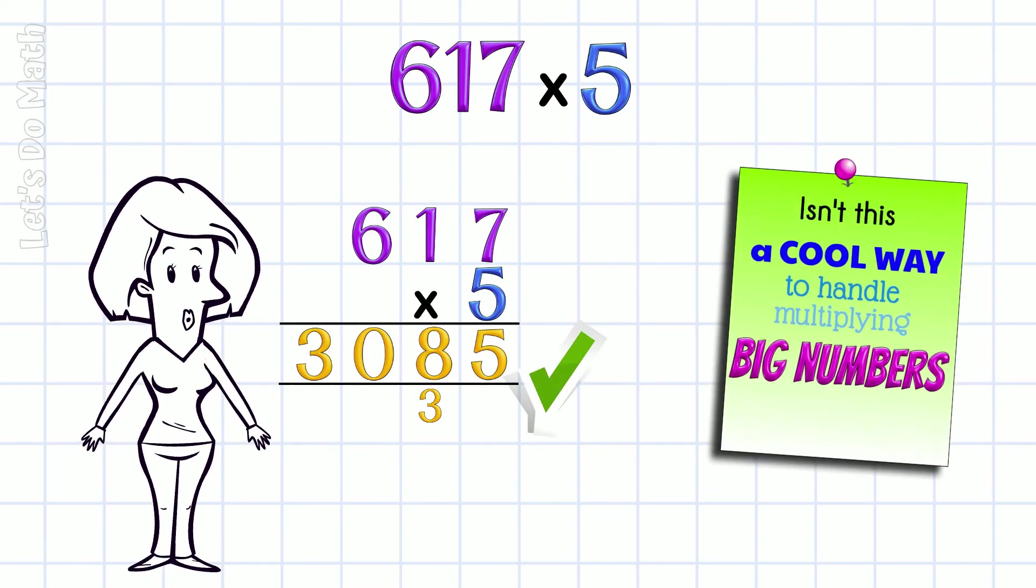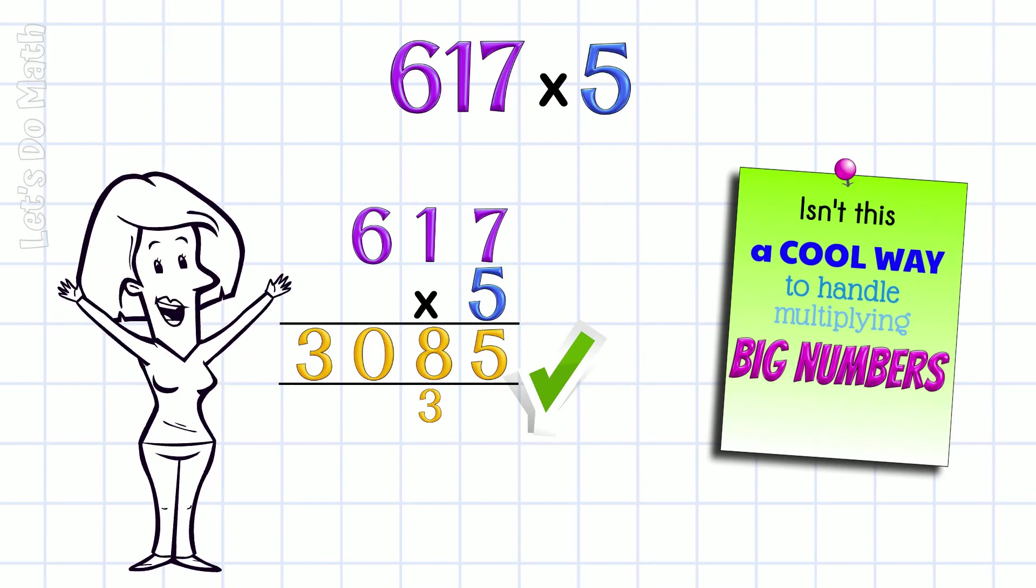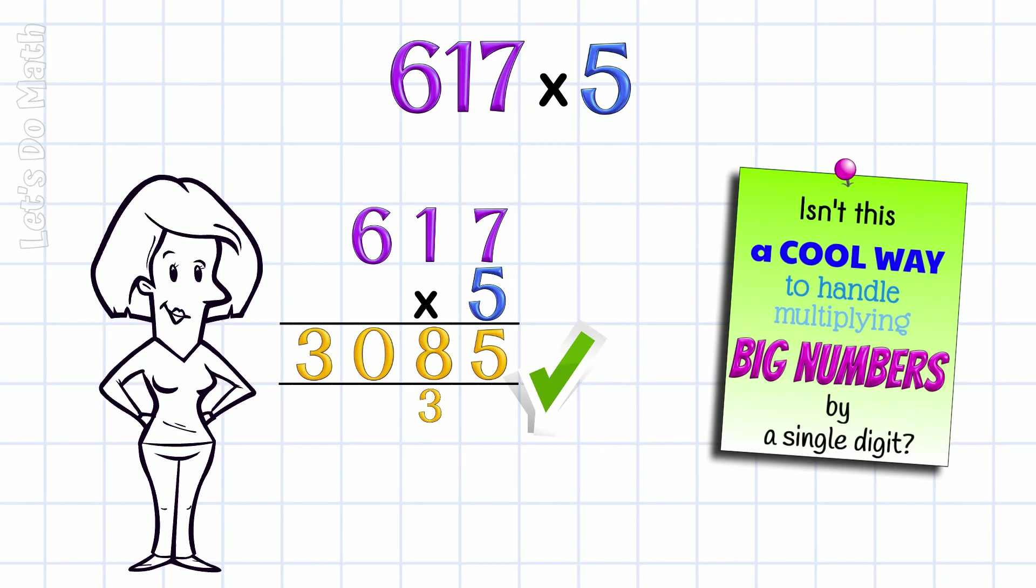Isn't this a cool way to handle multiplying big numbers by a single number? OK, last one: 4 digits by 1 digit.